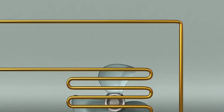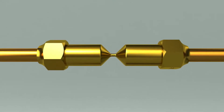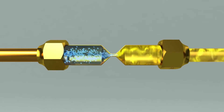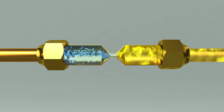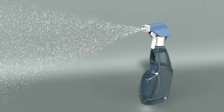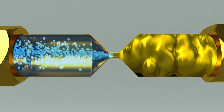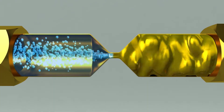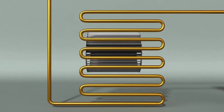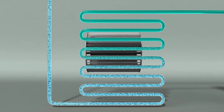The refrigerant passed through the condenser becomes liquid and flows into the expansion valve. There is a section in the expansion valve where the piping gets narrow, and as the refrigerant passes here, it splits up into many pieces — similar to the principle behind water being spread from a spray. As the pressure on the refrigerant drops, its temperature drops dramatically as well.